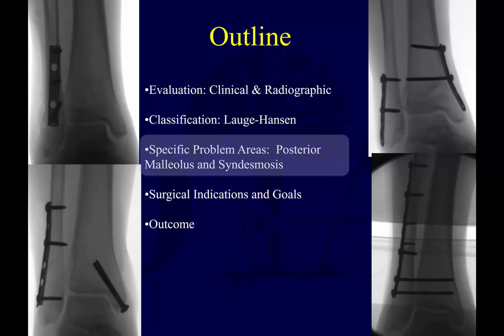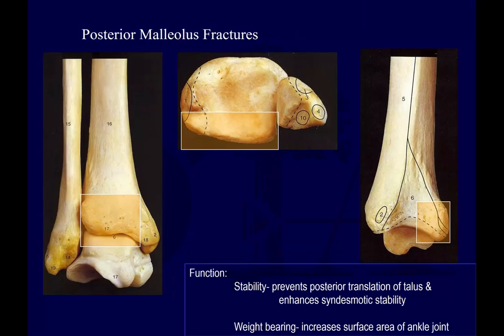We're going to move on now to the posterior malleolus and syndesmosis — specific problem areas, because there are a lot of pitfalls here. The posterior malleolus serves a function to provide stability, to prevent posterior translation of the talus, and also to enhance syndesmotic stability. It's shown here from the front, an axial view, and a lateral view to give a better idea of the osteology.